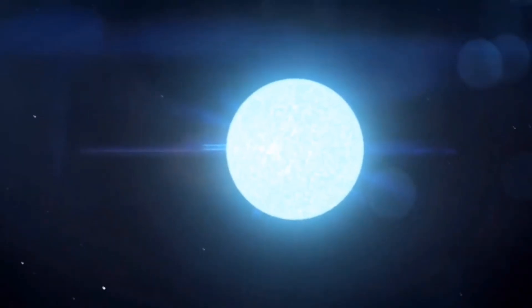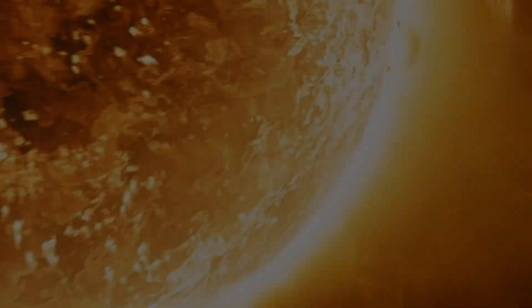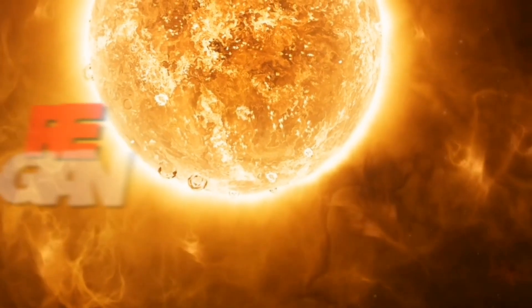In this star system, one star is a white dwarf, which forms when a star like our sun dies, and the other star is a red giant, which is essentially an old aging star. Do you know the most remarkable thing about this star system?